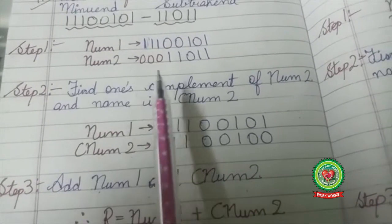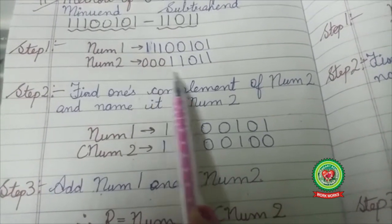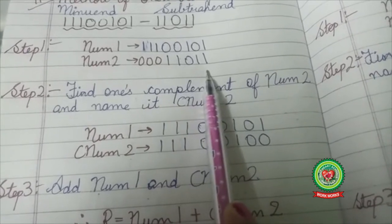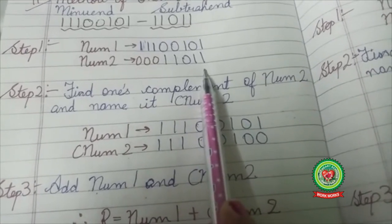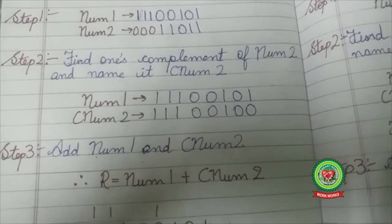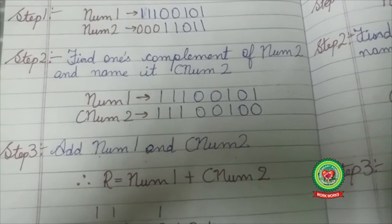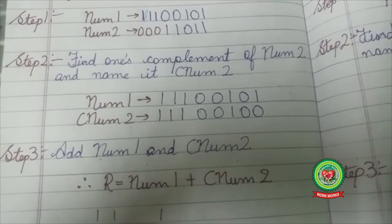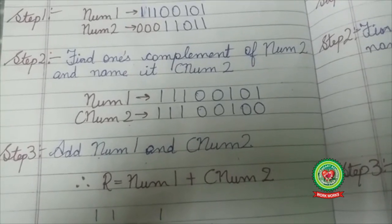Step 2. Now I will find the one's complement of the second number that is subtrahend. You know how to find one's complement? Yes, by inverting 0 to 1 and 1 to 0.